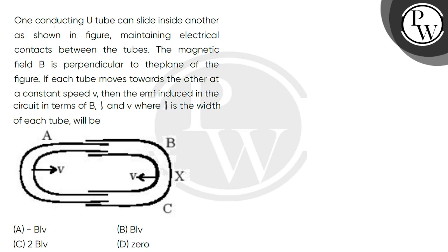Another question. One conducting U-tube can slide inside another as shown in the figure, maintaining electrical contacts between the tubes. The magnetic field B is perpendicular to the plane of the figure. If each tube moves towards the other at a constant speed v, then the EMF induced in the circuit in terms of B, l, and v, where l is the width of each tube.